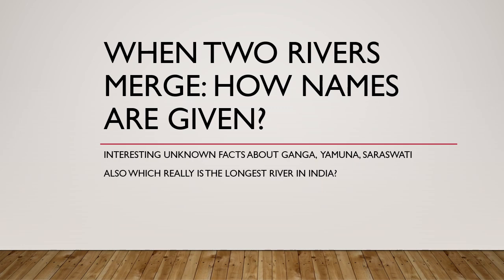Often times you may have wondered what determines the name of a river when two or more rivers meet at a confluence point. For example, when Ganga and Yamuna meet at Prayagraj, why is the combined river named Ganga and not Yamuna? We'll also answer a very interesting question — which actually is the longest river in India — whose answer is not as obvious as you might think.